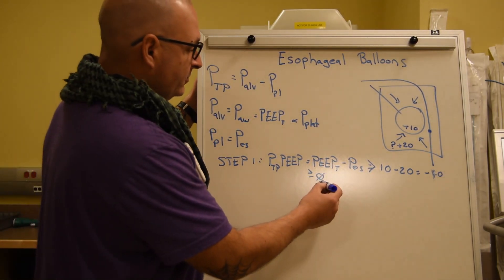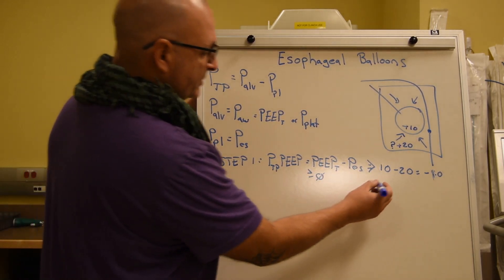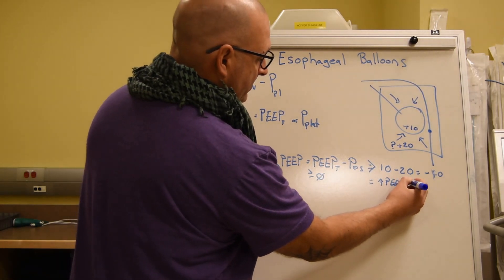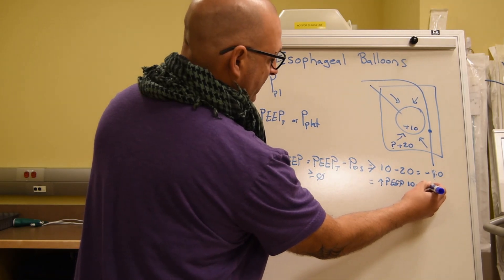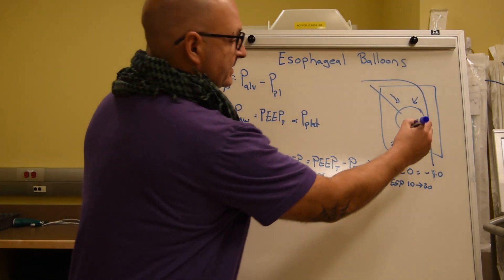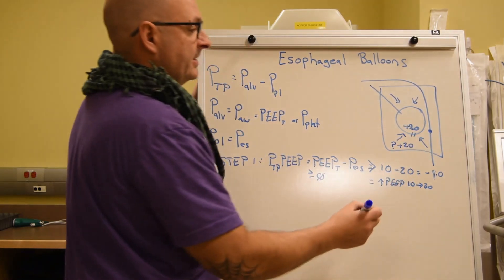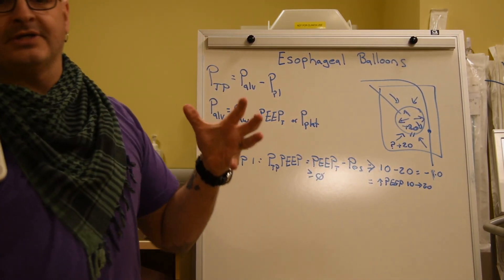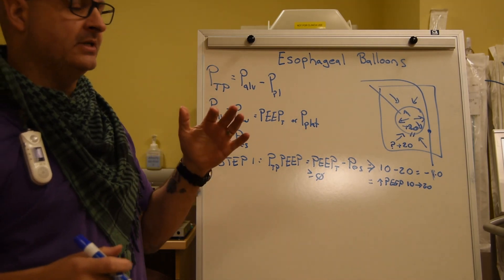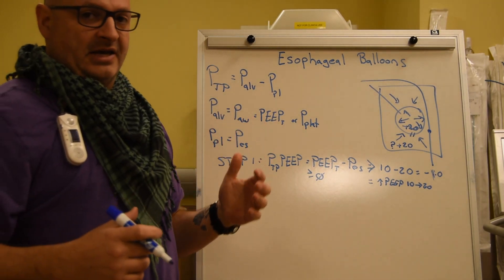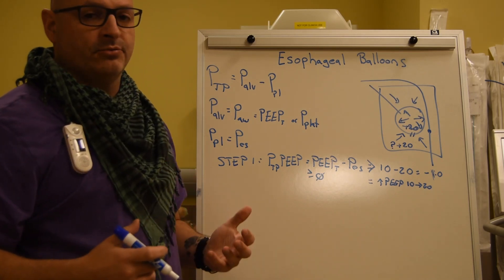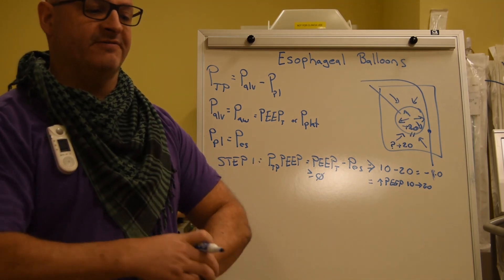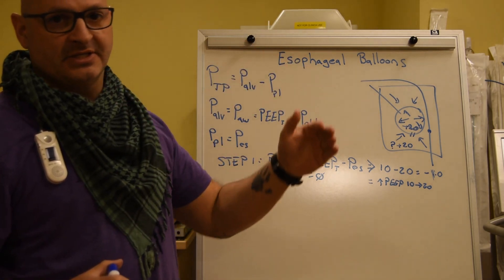What do we need to do? We need to increase our PEEP to get to zero. To do that, we would increase our PEEP from 10 to 20. This makes sense, because 20 equals 20. The pressures are now equal in the bag and the box. Therefore, your lung can now be open. Now, at this point, because you've probably already got a lot of atelectasis on board, we recommend doing a recruitment maneuver to actually get the lung nice and open.